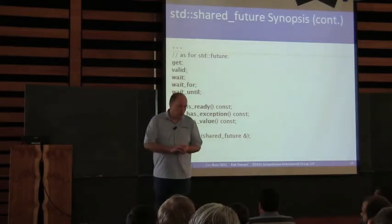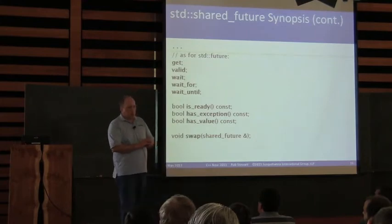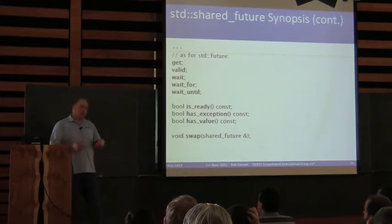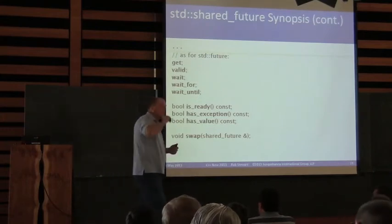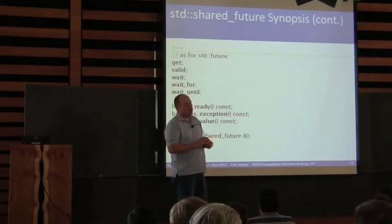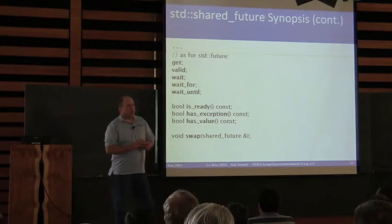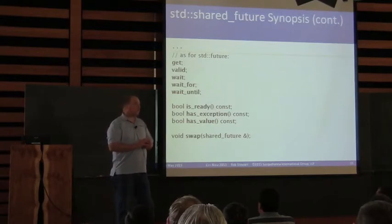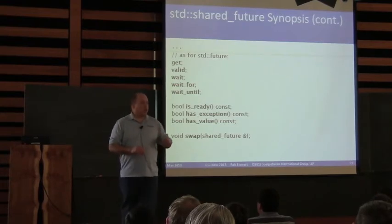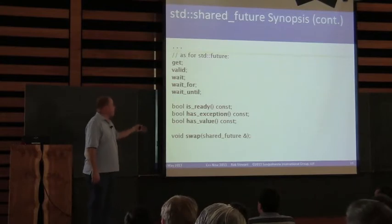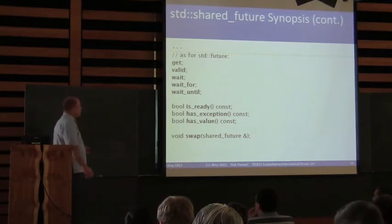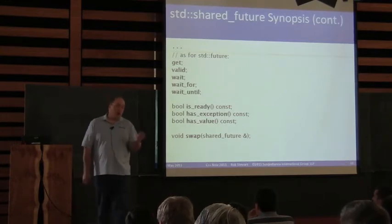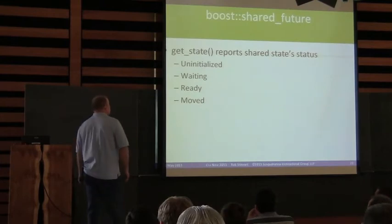With shared_future, because multiple instances are referencing the shared state, there is additional synchronization involved in order to access it — so that's an additional cost. Why did std::future not offer is_ready, has_exception, has_value? I don't know the answer. So if you want those, you've got to go with shared_future, but that has a slight performance cost. As with future, Boost::shared_future offers get_state so you can retrieve the state without having to wait first.